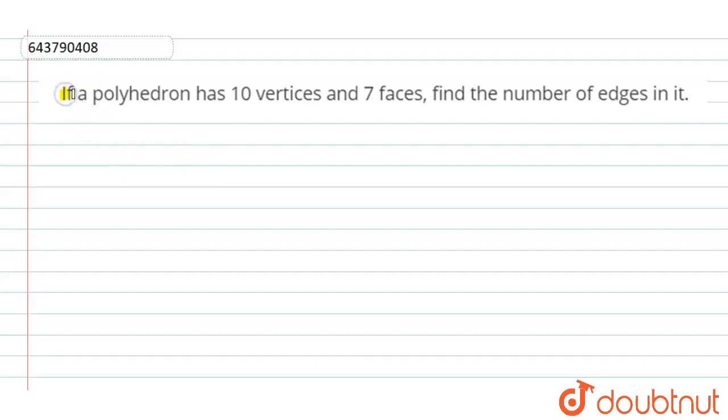If a polyhedron has 10 vertices and 7 faces, find the number of edges in it. So for finding the number of edges, first we have to know the Euler formula.